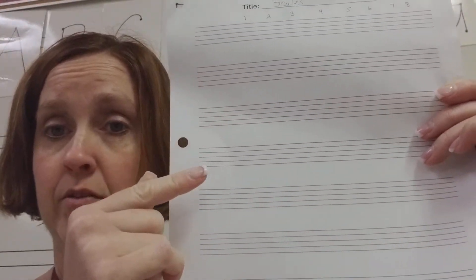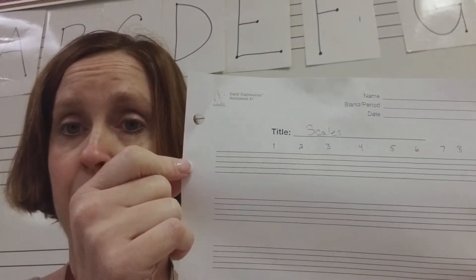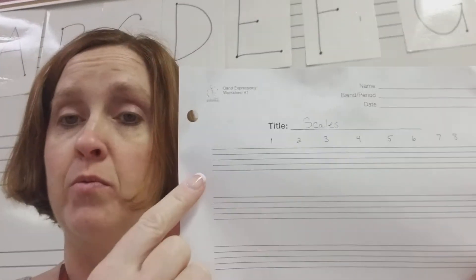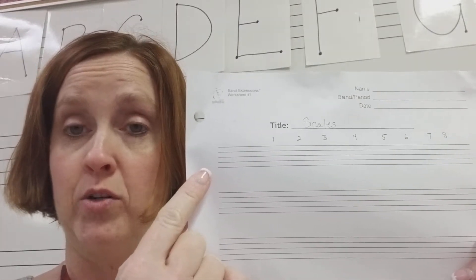It has seven staffs or staves. And we're going to start with the very first one. And in the margin, we're going to just write a lowercase g because that's the scale that we're going to write out.